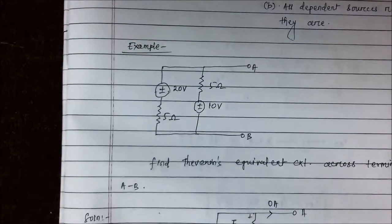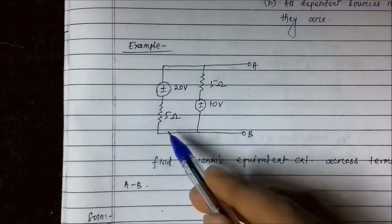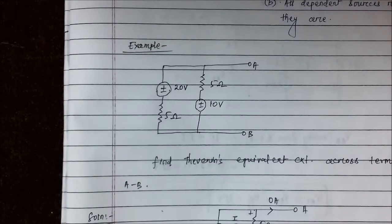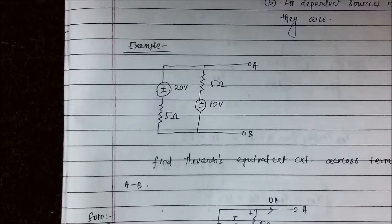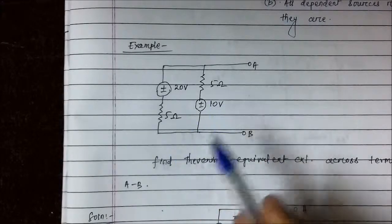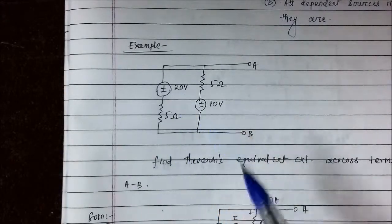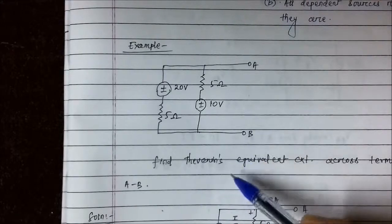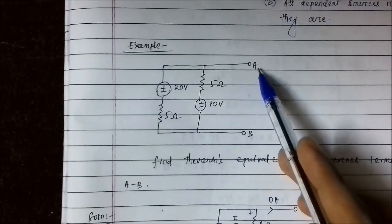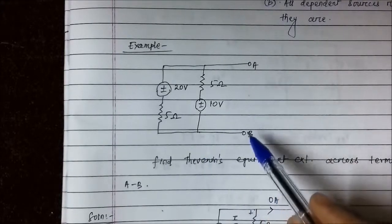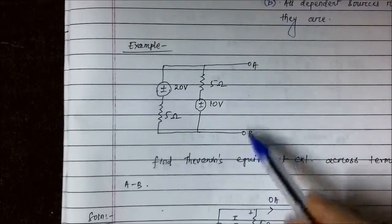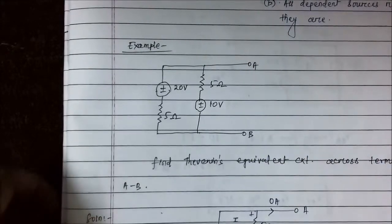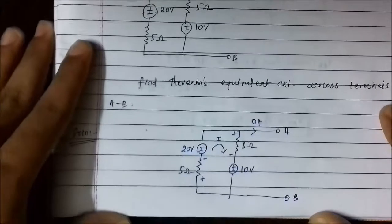Let's solve a problem to understand this better. The circuit network consists of two resistances and two voltage sources — independent DC voltage sources, not dependent on any external variable. The resistance values are 5 ohm and 5 ohm, and the voltages are 20 volt and 10 volt. We have to find the Thevenin equivalent circuit across terminals A and B.